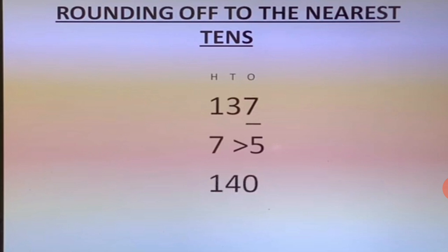Suppose the number is one hundred thirty seven. First of all we will write the place value above the number: ones, tens, hundred. Now here we have to round off at the tens place, so we look at the number to the right of tens. At tens place we are having three and the number to the right of three is seven.